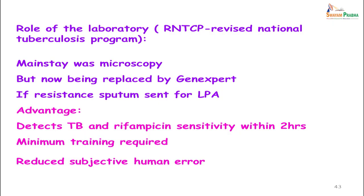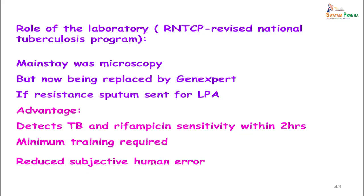Now with Gene Xpert, which gives you results within 2 hours, you can diagnose whether a patient has Mycobacterium tuberculosis and whether it is resistant to rifampicin. If so, these patients are immediately started on second-line drug treatment, which prevents them from spreading the infection to others. The resistant sputum is also sent for LPA where you can detect the exact genes responsible for the resistance. The advantage of Gene Xpert is that it detects TB presence and rifampicin sensitivity within 2 hours, minimum training is required, and there is reduced subjective human error which was seen with microscopy.